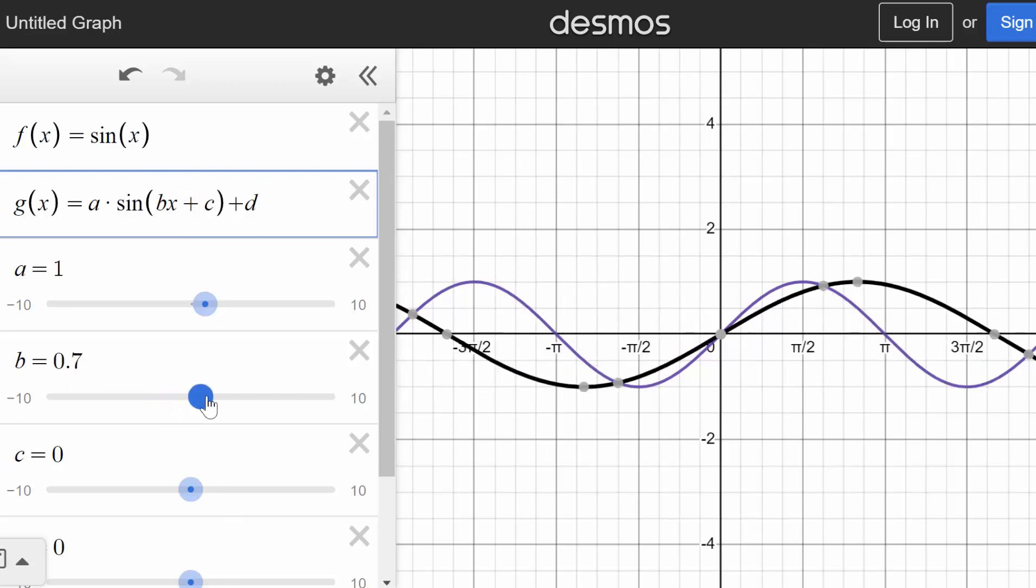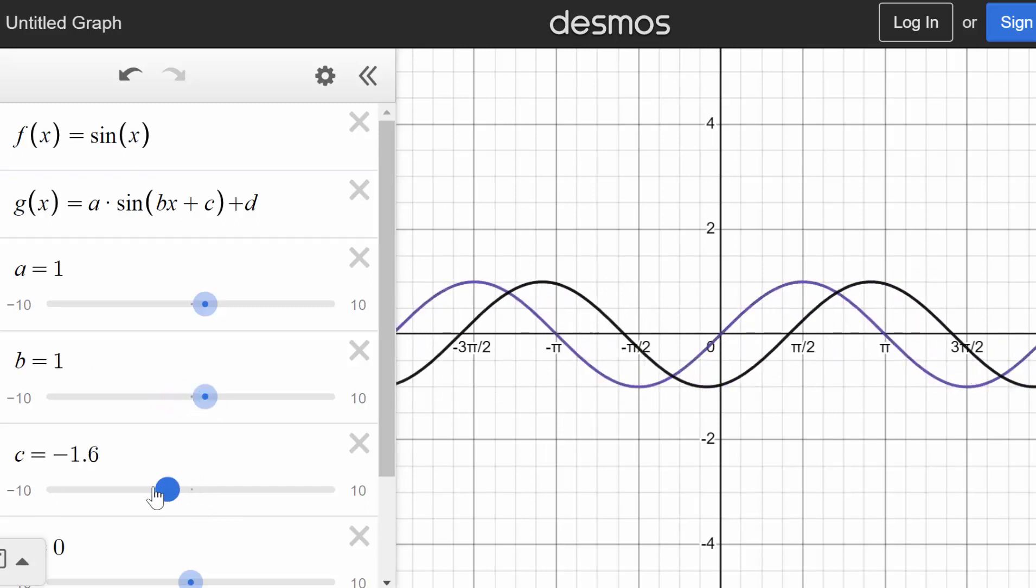Which is why the formula for the period is 2 pi over the absolute value of b. If we take b back to its parent function value of 1, we can now look at horizontally shifting this function. And increasing c to higher and higher values actually moves the function to the left.